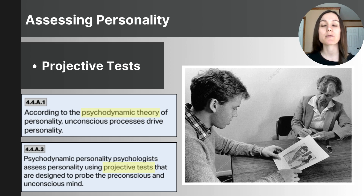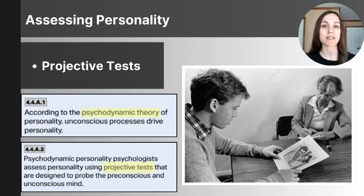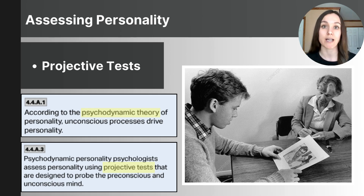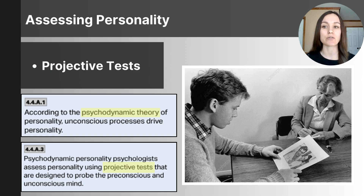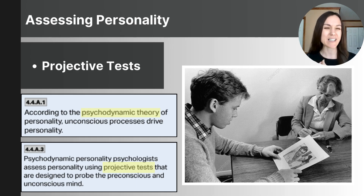Another projective test used by psychodynamic psychologists is the Thematic Apperception Test, or TAT. Developed in the 1930s, it involves showing participants a series of ambiguous images depicting various situations and characters, and asking them to tell a story about what's happening. The idea is that the person will project their own emotions, desires, and conflicts onto the characters, revealing aspects of their unconscious mind. Psychotherapists analyze themes, characters, and emotions to gain insight into the person's psychological state, motivations, and interpersonal dynamics. Like the Rorschach, the TAT has been critiqued for subjectivity, but is still used in some assessments today.